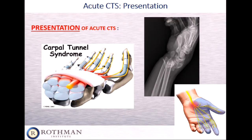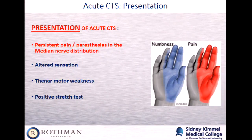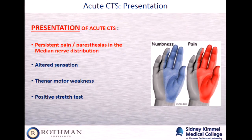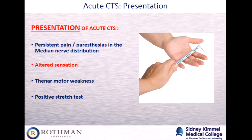When dealing with acute carpal tunnel syndrome, it's the same distribution of numbness, but unlike idiopathic CTS, that numbness tends to have a more painful quality and may also be more progressive — symptoms rise more rapidly and are more bothersome. So it's the same distribution, but a little bit more painful and a little bit more progressive. You'll also notice altered sensation.